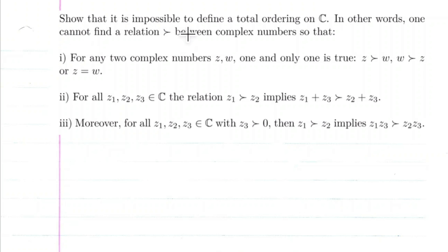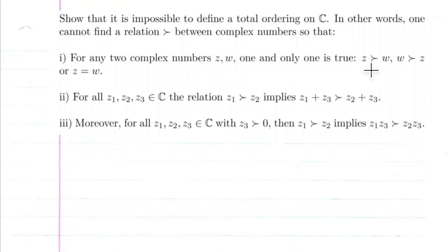We're going to show that it is impossible to define a total ordering on ℂ. In other words, one cannot find a relationship — I'm going to refer to it as 'bigger than' — between complex numbers so that for any two complex numbers Z and W, one and only one is true: Z is bigger than W, W is bigger than Z, or the two are equal to each other.